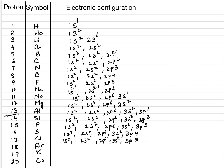Argon is another noble gas. Its configuration is 1S2 2S2 2P6 3S2 3P6, giving 18 electrons. Then comes potassium.